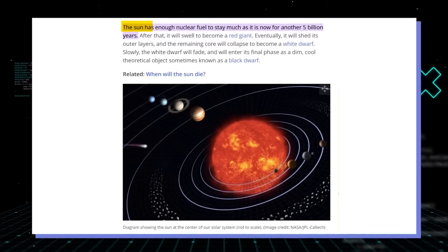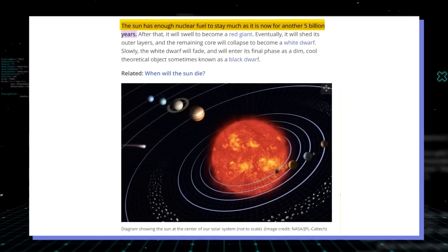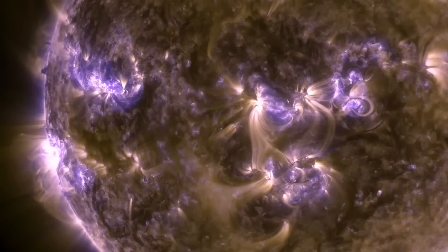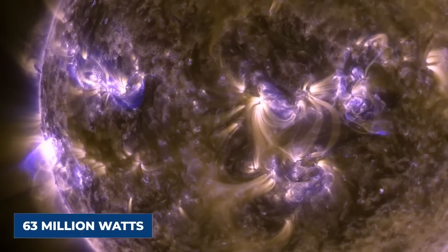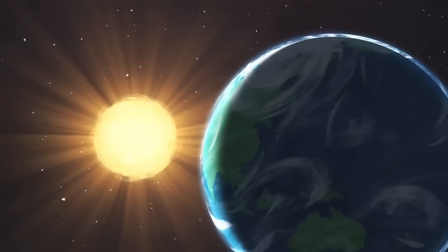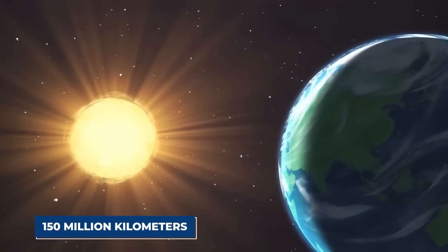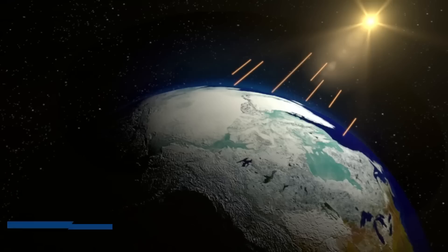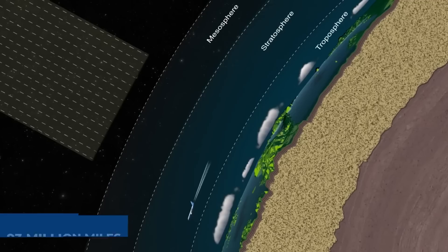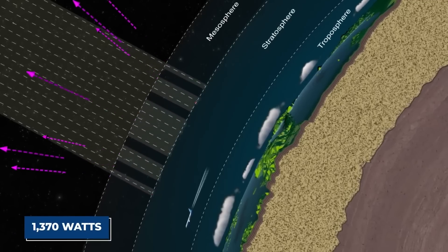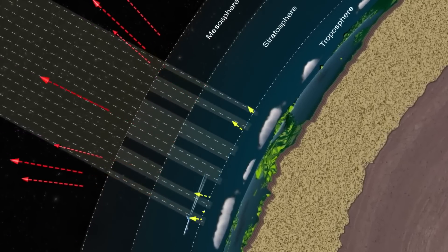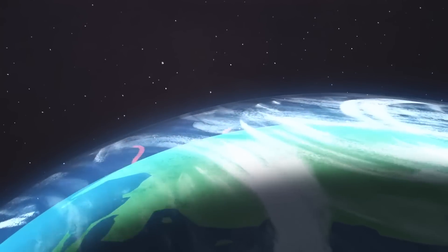However, it has enough fuel to stay active for another 5 billion years. The sun's surface emits about 63 million watts of energy per square meter. By the time the energy reaches the Earth after traveling 150 million kilometers or 93 million miles, it has diminished to 1,370 watts per square meter at the top of the atmosphere directly facing the sun.